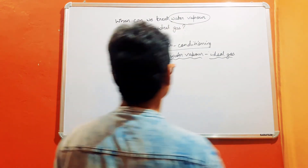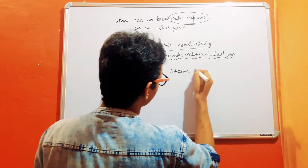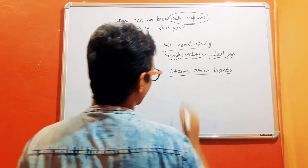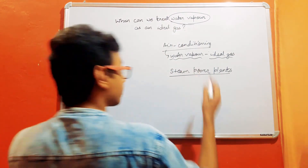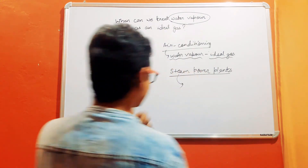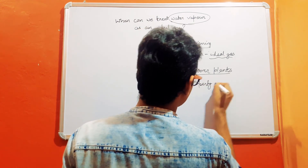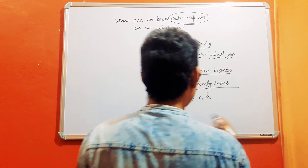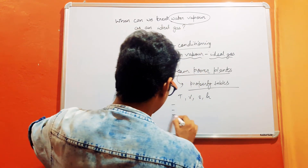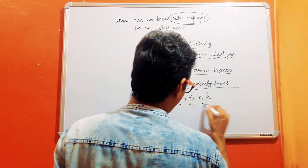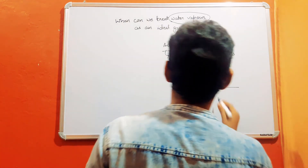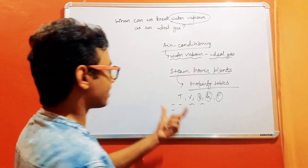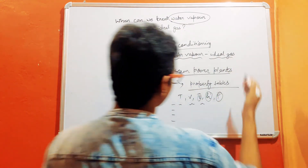However, in steam power plants the water vapor is at very high pressure, and because of that we cannot treat water vapor as an ideal gas. Instead, it is advisable to use property tables, in which properties such as temperature, specific volume, entropy, and enthalpy are listed in tabulated form found experimentally, so we can look up values at specific temperature, pressure, or volume conditions.